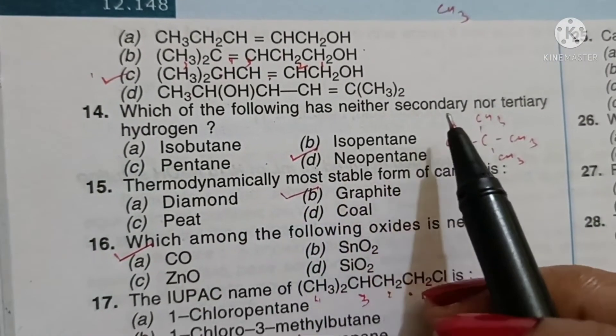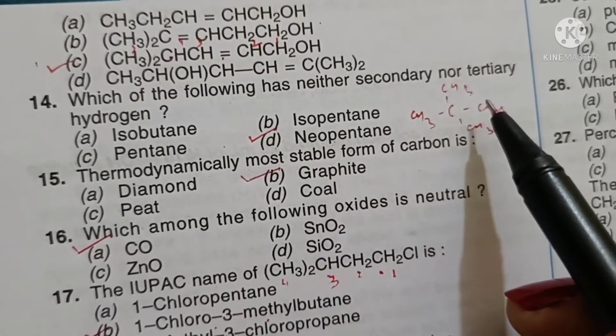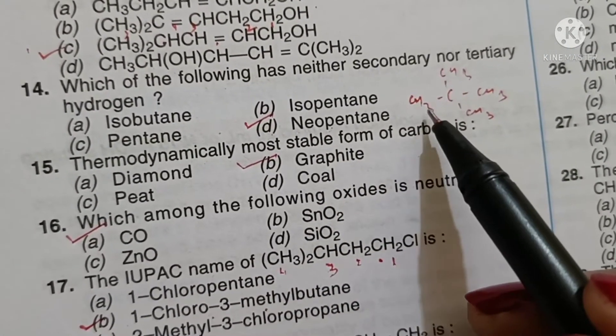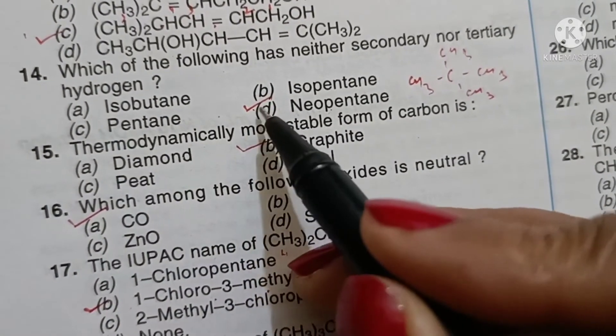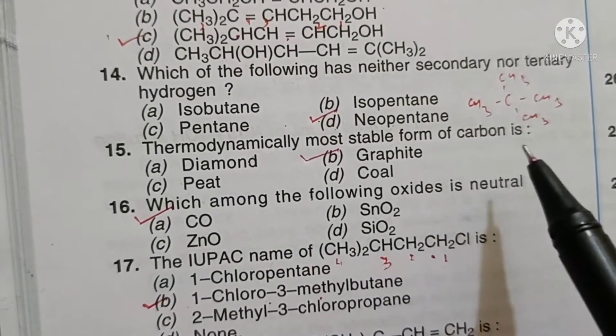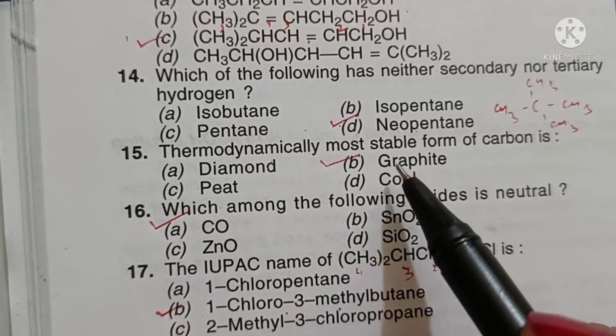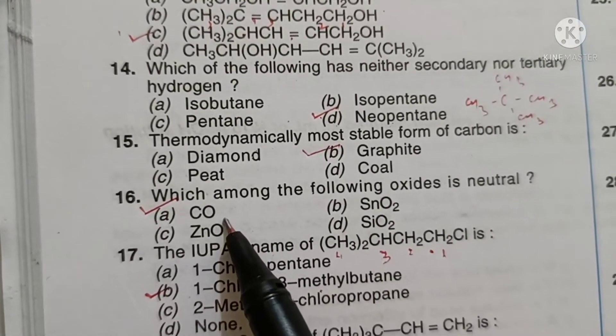Which of the following is neither secondary nor tertiary hydrogen? Neopentane has this structure, so it has only primary hydrogens and neither secondary nor tertiary. Option D is the correct answer. Thermodynamically most stable form of carbon is graphite. Which among the following oxides is neutral? Carbon monoxide.